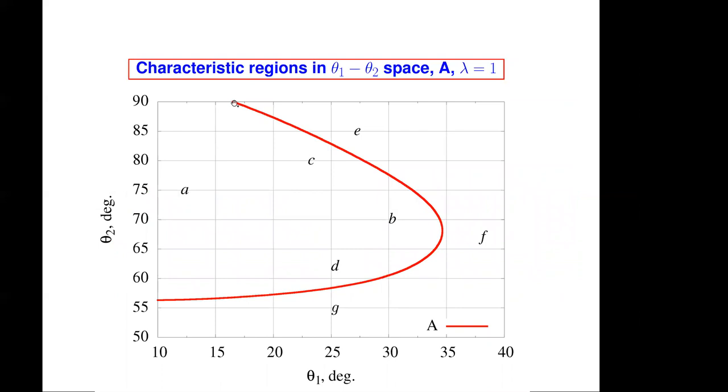Now, I want to jump ahead and show the boundary in one case. In theta 1, theta 2 space, we get a boundary that looks like this. A loop which has a lower branch and an upper branch and the maximum theta 1. I show this because I want to characterize flows in different regions of this map. Inside the loop, the flow is unsteady. Outside the loop, it's steady. So let me show you some steady flows first at E, F and G.